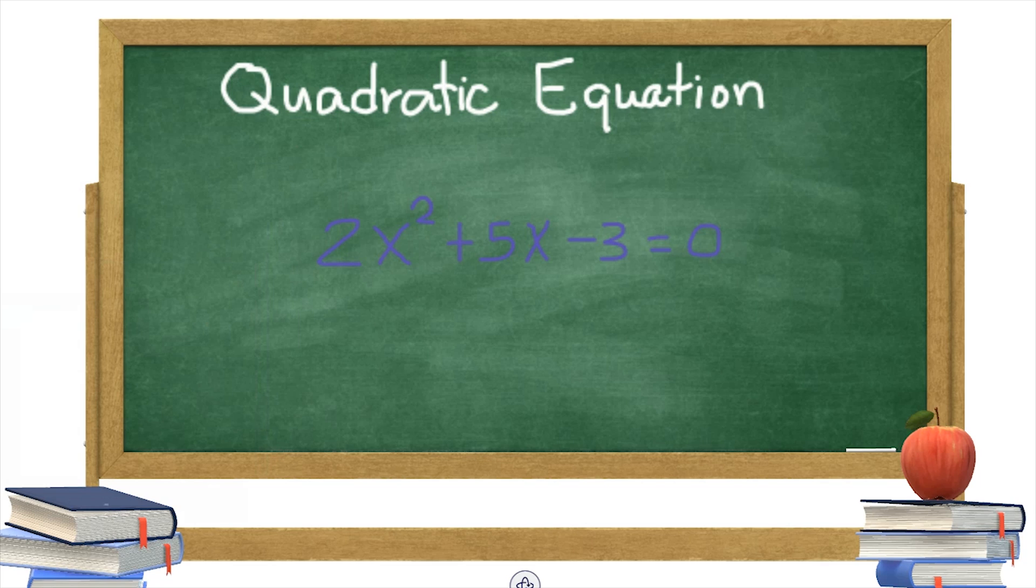Let us determine whether this equation is quadratic or not quadratic. It has a quadratic term, 2x squared. Therefore, it is a quadratic equation in standard form with a is equal to 2, b is equal to 5, and c is equal to negative 3.